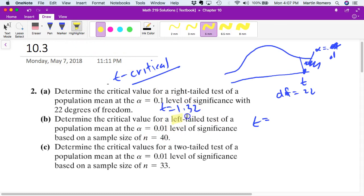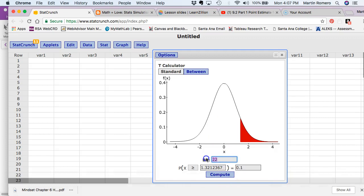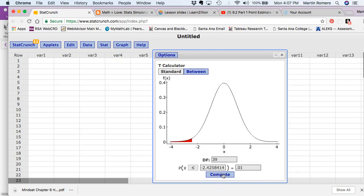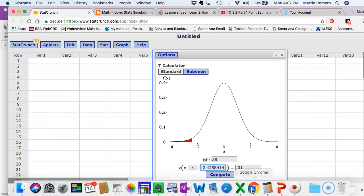Left-tailed test. So in this case we're going to be on this side over here. We're looking for the T. In this case alpha is 0.01. In this case n is 40, so that means degrees of freedom is 39. So 39 goes there, not 40 because degrees of freedom is n minus 1. Put that on the left side and it's 0.01 this time. Compute and you should get negative 2.43 or negative 4.26, however you want. If we go 3 decimals there, negative 2.426.